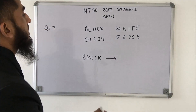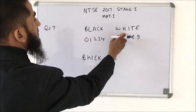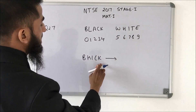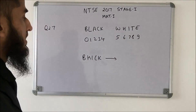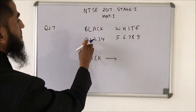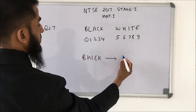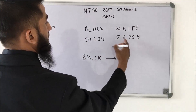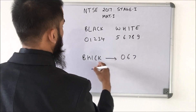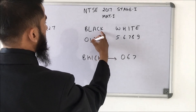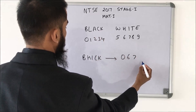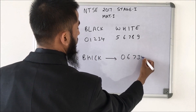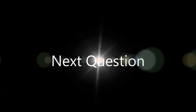This question says that if BLACK and WHITE are represented by these numbers, what will B, H, I, C, K be represented as? We can see B is 0, H is 6, I is 7, C is 3, K is 4. So BHICK = 0, 6, 7, 3, 4. Again a very simple question.